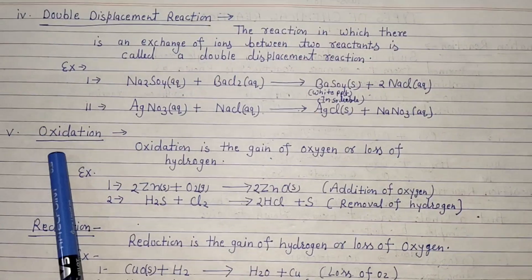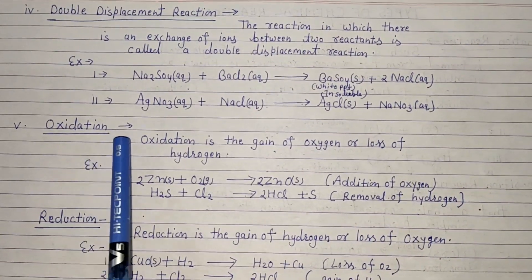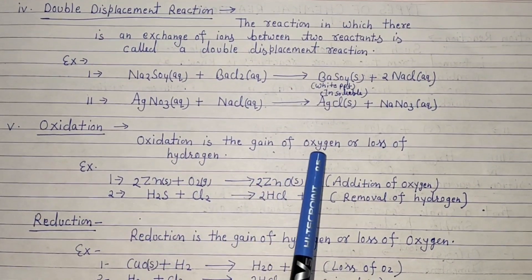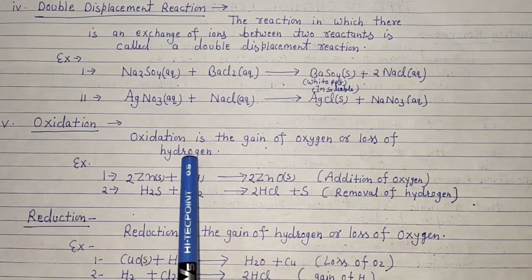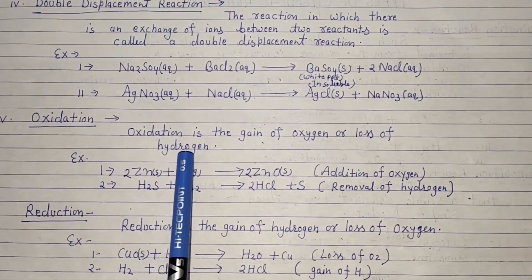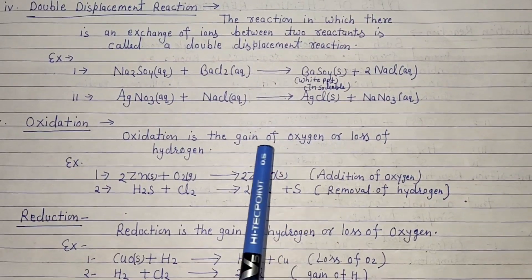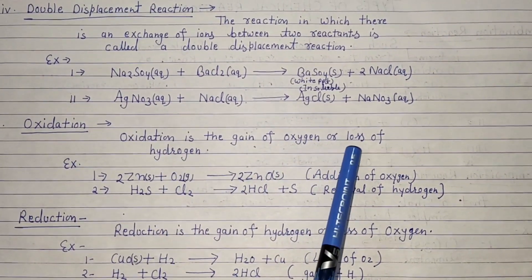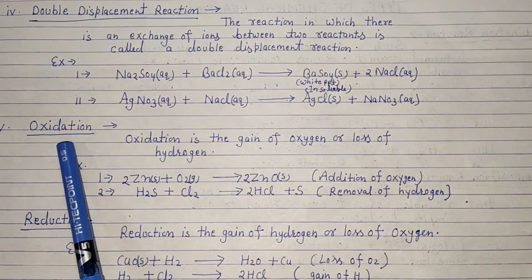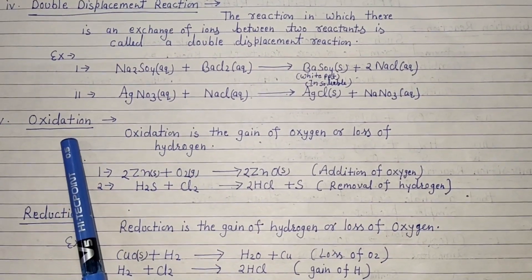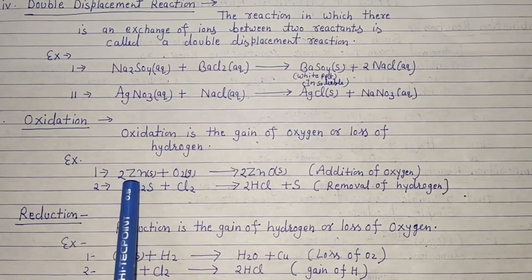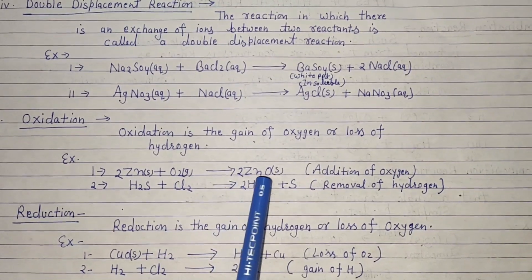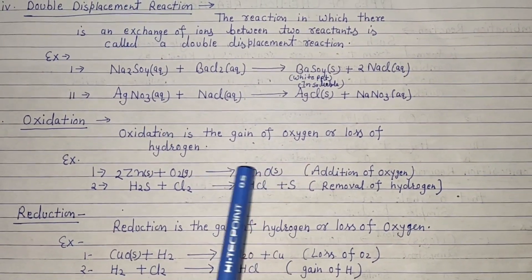Next type: oxidation. Oxidation is defined as the gain of oxygen or loss of hydrogen. When oxygen is gained and hydrogen is lost, that reaction is oxidation. For example: zinc plus oxygen gives zinc oxide — zinc gains oxygen, so this is oxidation.